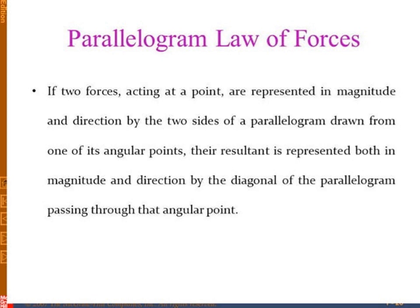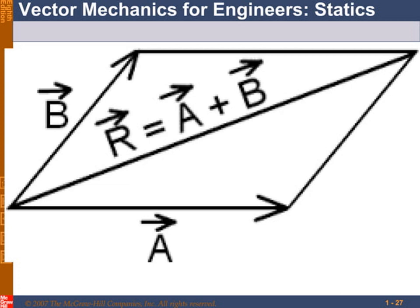Next is the parallelogram law of forces. Here, two forces acting at a point — that means it is concurrent forces. Concurrent force means two forces acting at the same point. The two forces are represented by the two sides of the parallelogram, and the diagonal is the resultant of the two forces. Here, A and B are the two forces given, represented as the two sides of the parallelogram, so the resultant of A and B is the diagonal of the parallelogram.